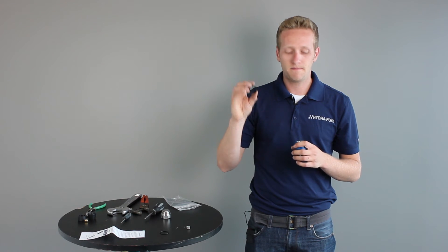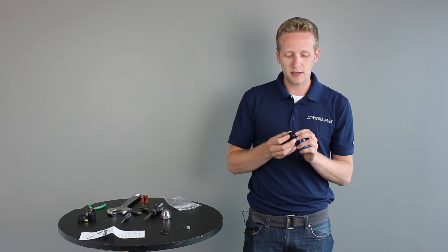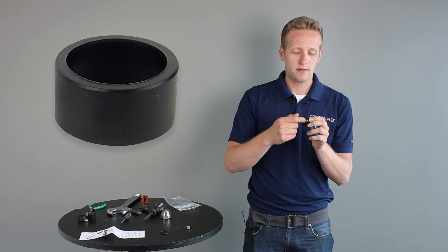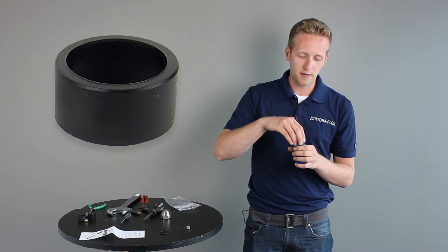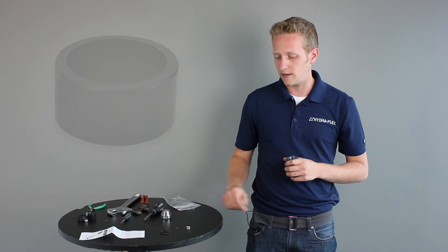Then we can take our top insert, we can put that in making sure that the smaller ID with the little lip is facing upwards, and then simply just drop that in.